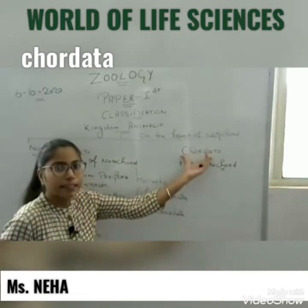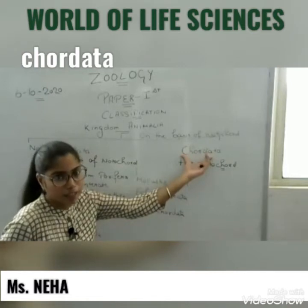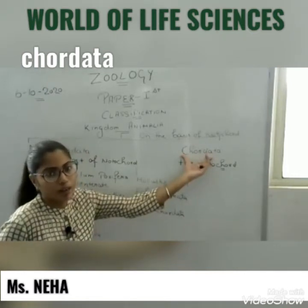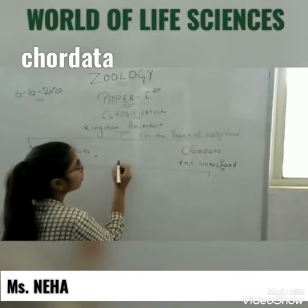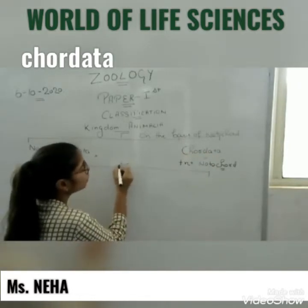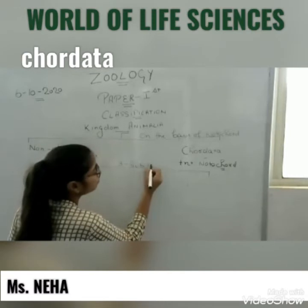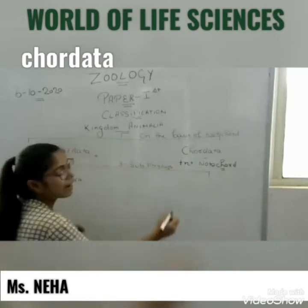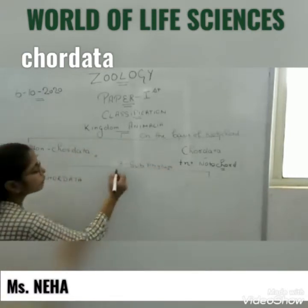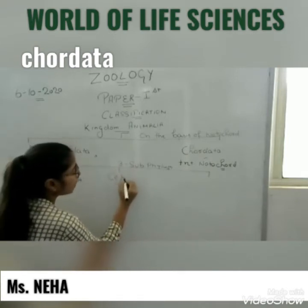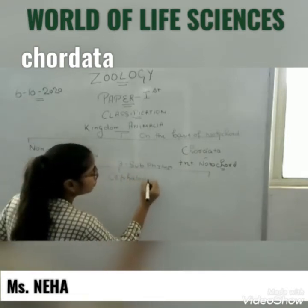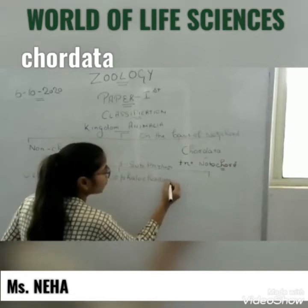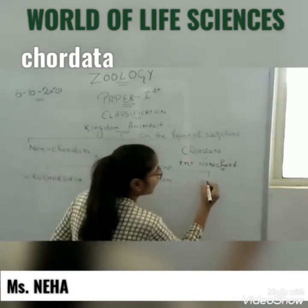This phylum Chordata is classified into three sub-phyla on the basis of the fate of the notochord: Urochordata, Cephalochordata, and Vertebrata.